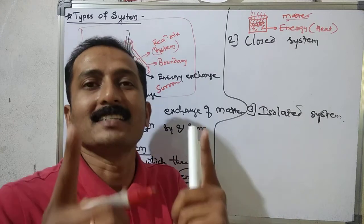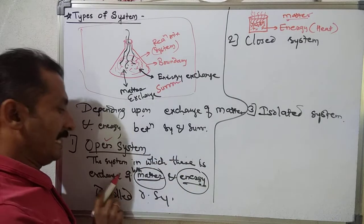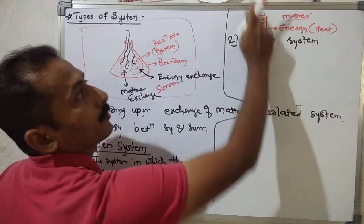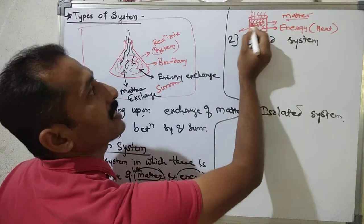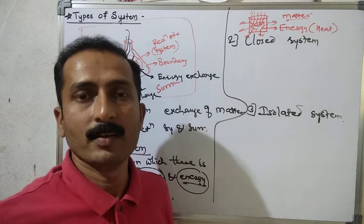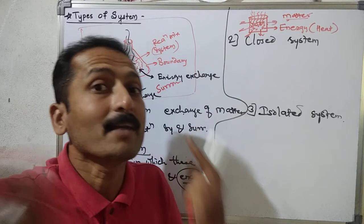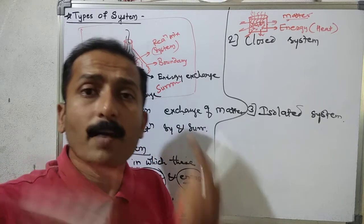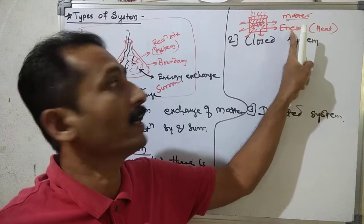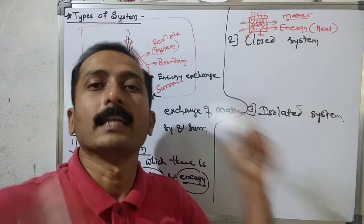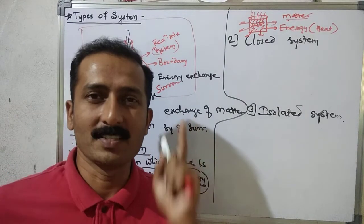The system in which there is both matter and energy exchange — the beaker is warm, it is feeling hot when we touch it. The heat is coming out, so energy is being exchanged. And the water vapors are going out, so matter is also being exchanged. Such a system is called an open system.